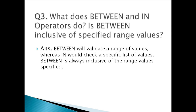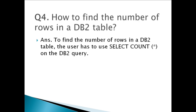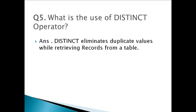Question four: How to find the number of rows in a DB2 table? To find the number of rows, use SELECT COUNT(*) in the DB2 query. Question five: What is the use of the DISTINCT operator? DISTINCT eliminates duplicate values while retrieving records from a table.